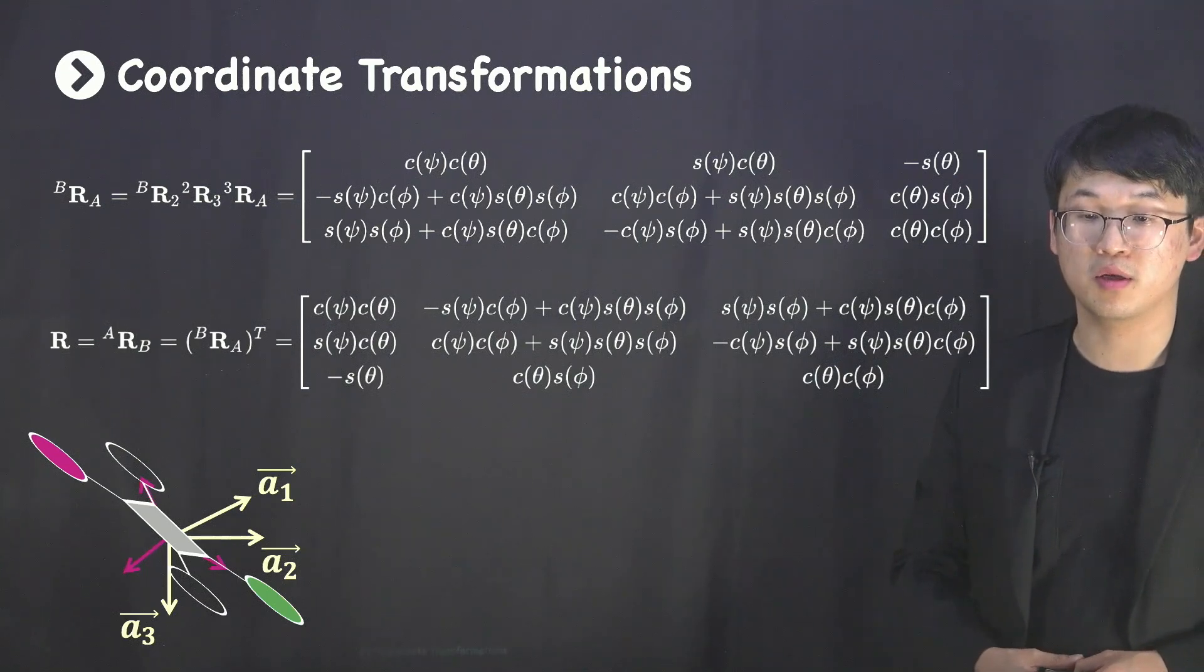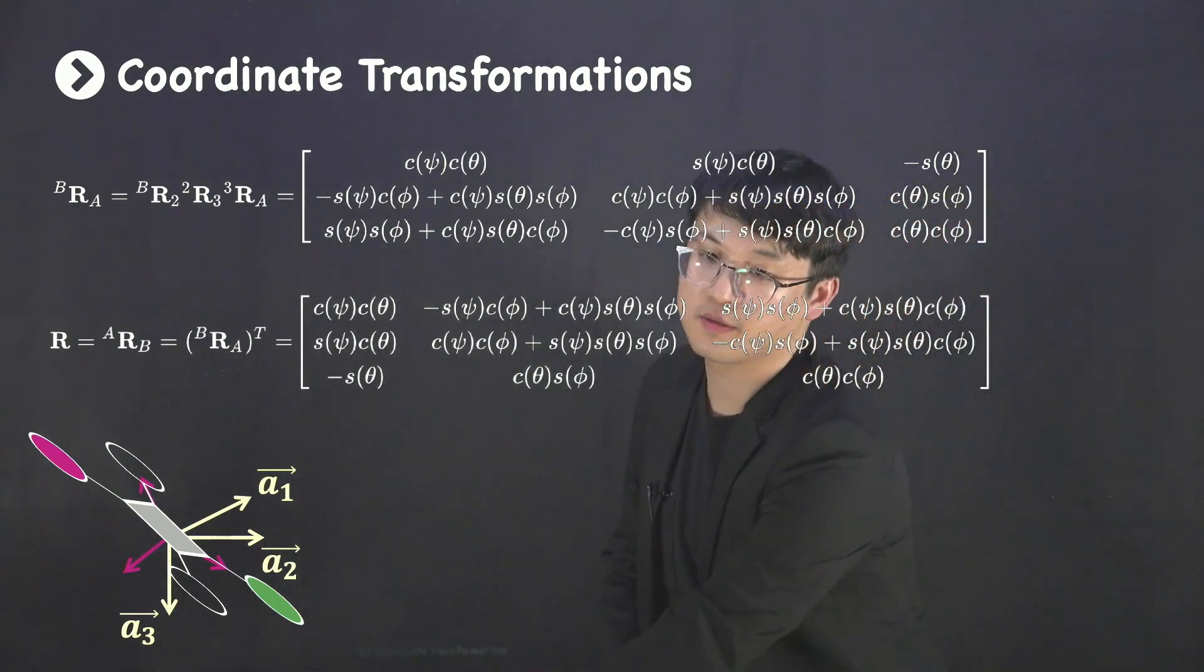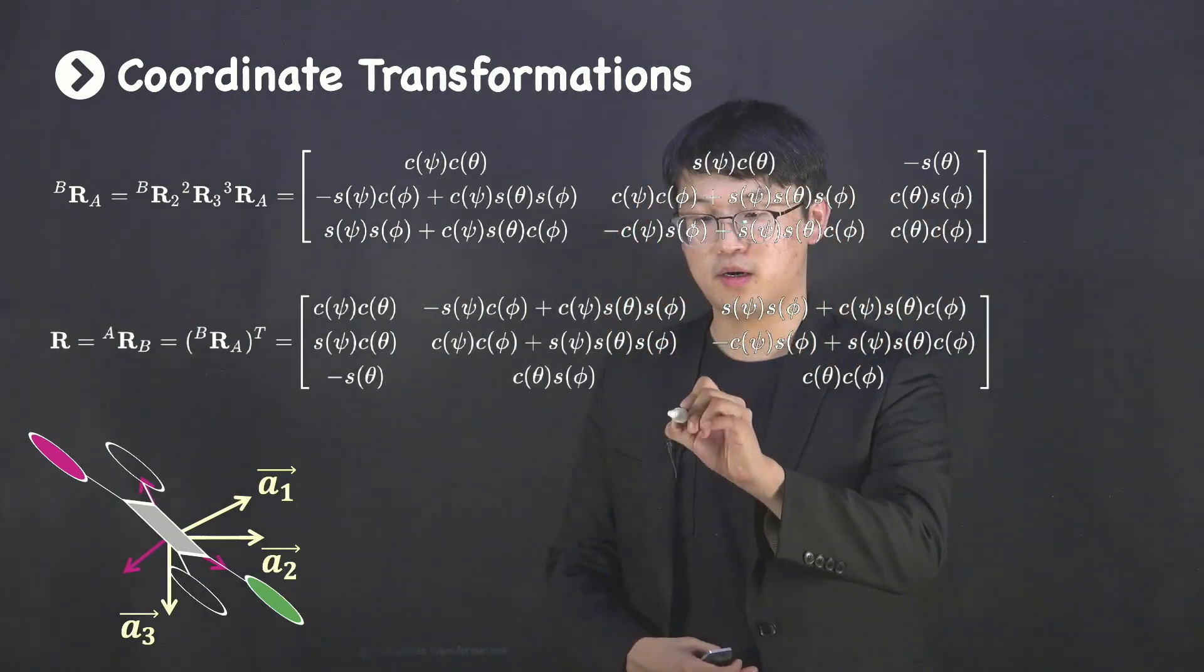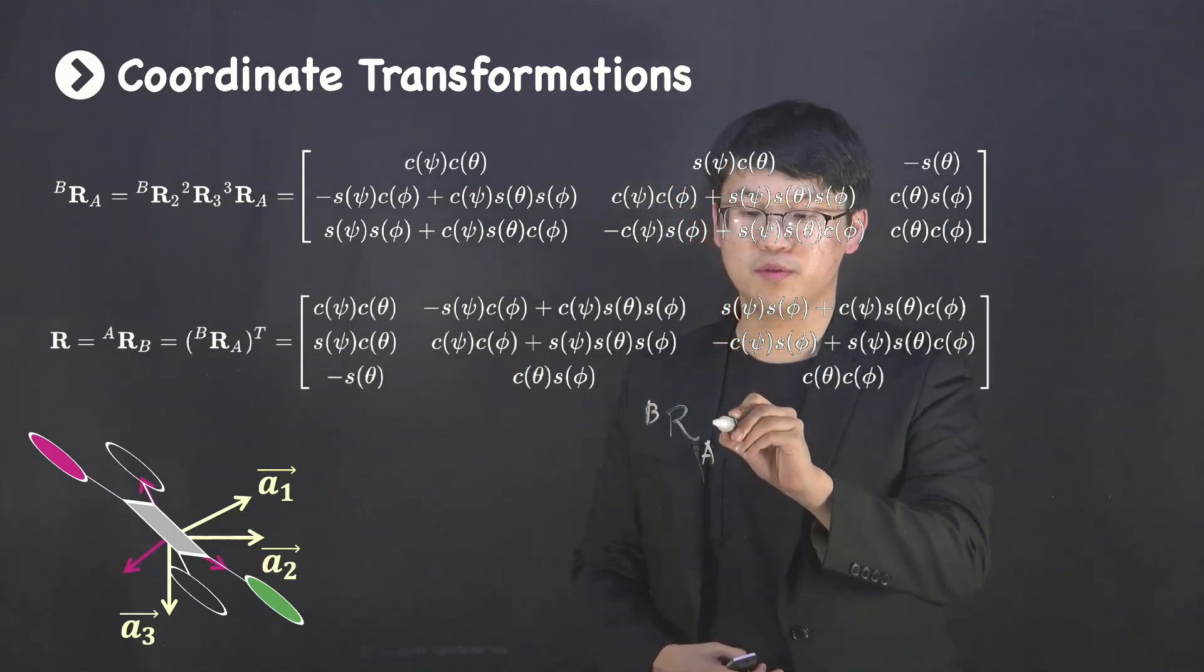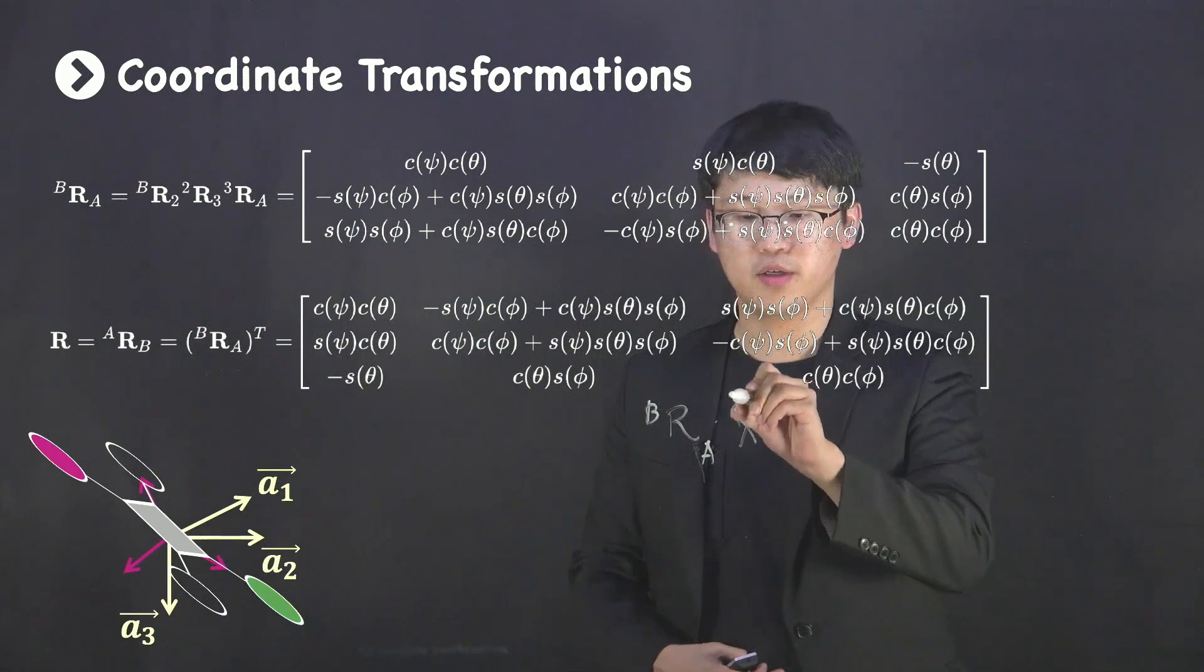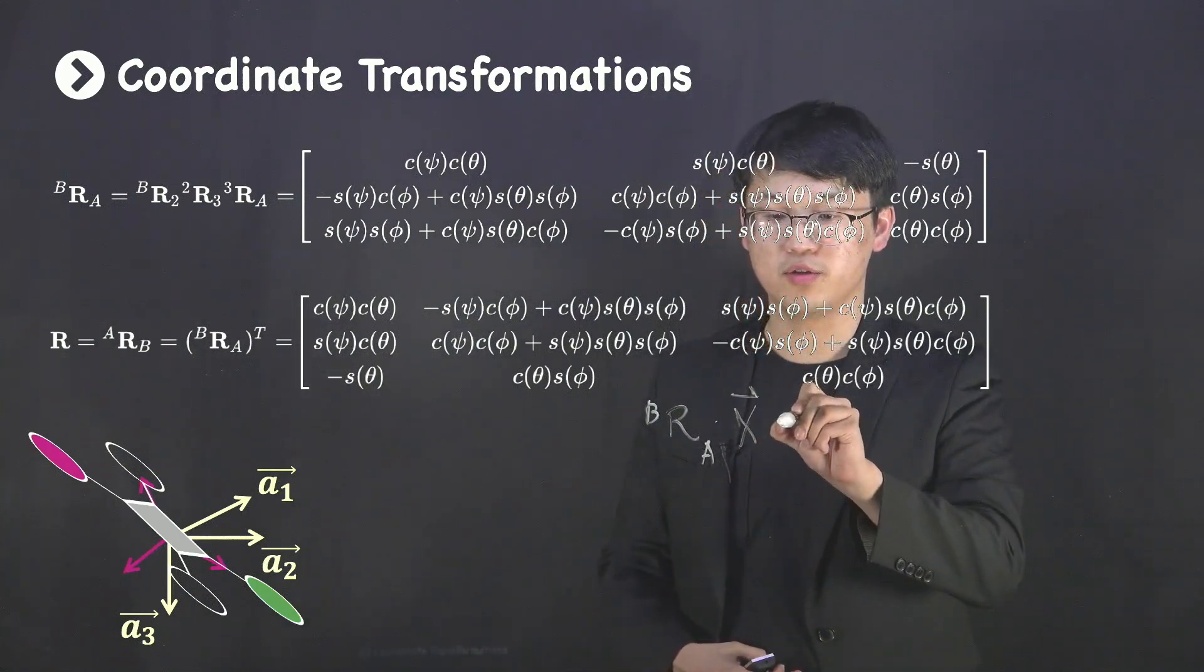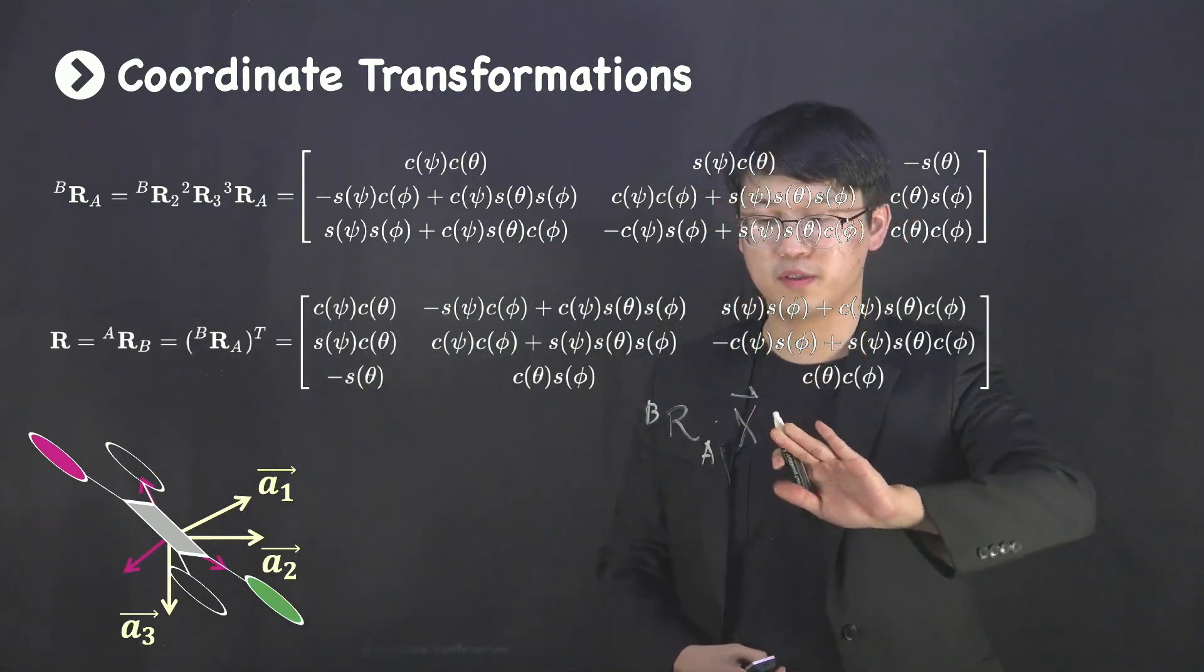Considering the fact that RBA matrix transforms your vector in an inertial frame into a body fixed frame, R matrix is the inverse of RBA matrix.